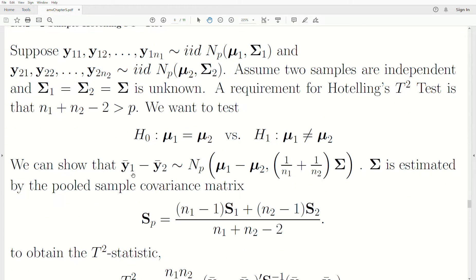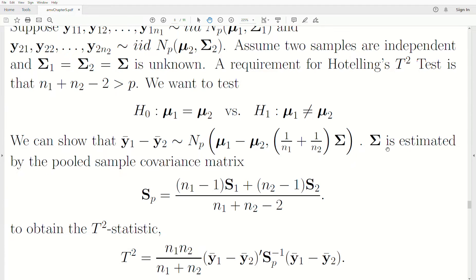We can show that the difference of our sample mean vectors is multivariate normal with mean difference μ1 minus μ2 with this covariance matrix. We estimate Σ by a pooled sample covariance matrix. S1 is a sample covariance matrix using sample one, and S2 using sample two. This is an unbiased estimate for Σ.